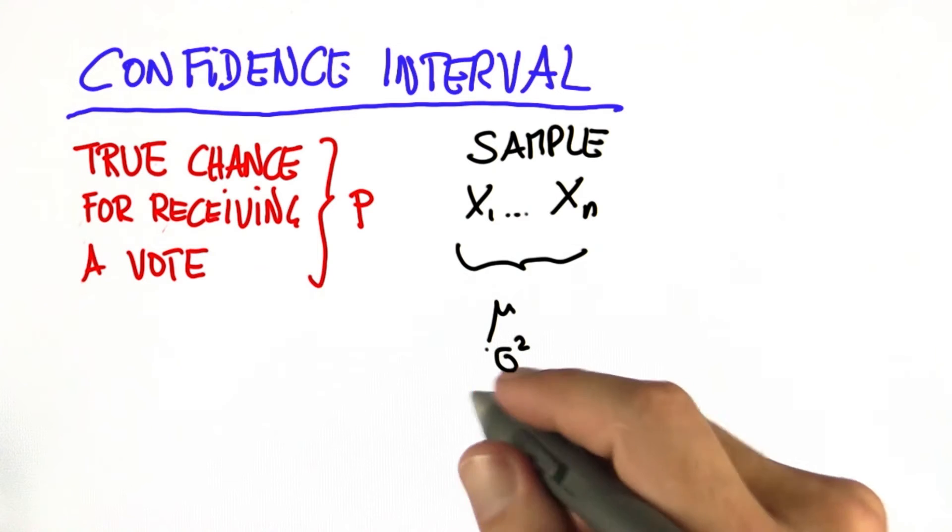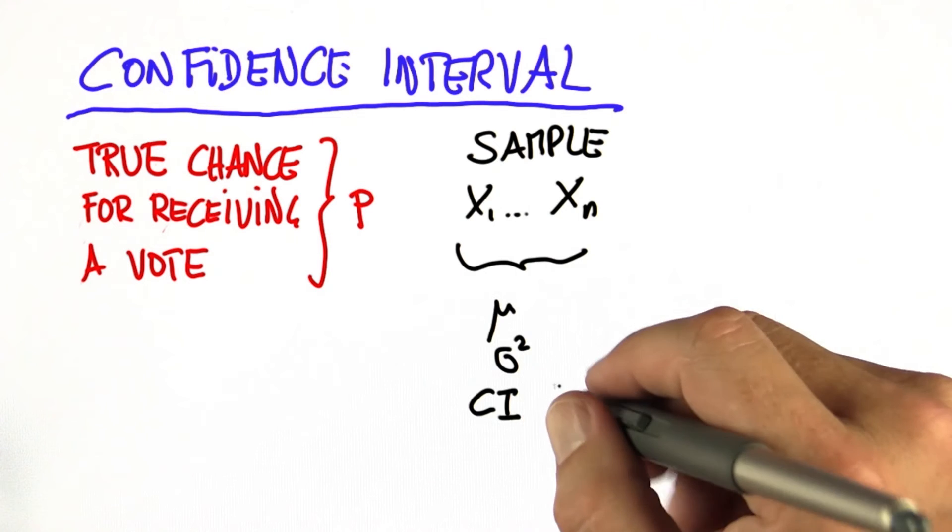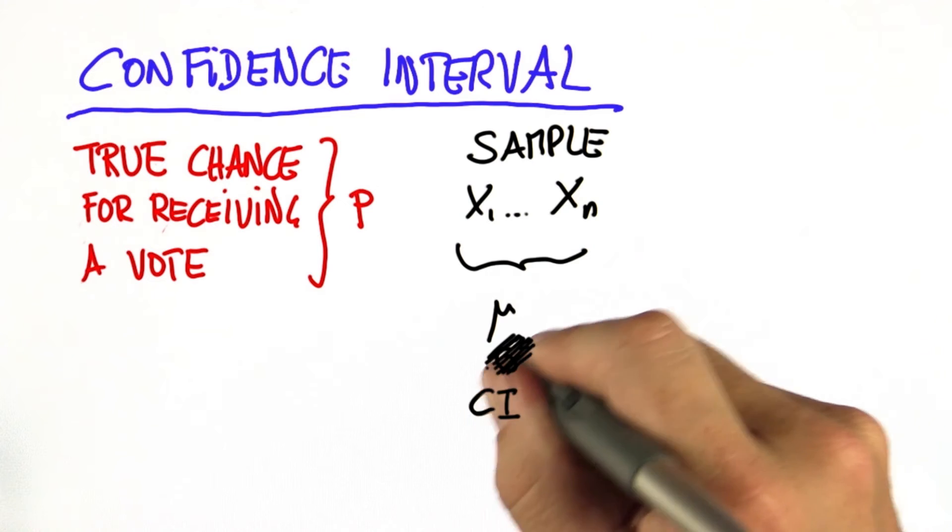But what's new now is the confidence interval. And the confidence interval is not the same as the variance. In fact, drop the consideration of the variance.